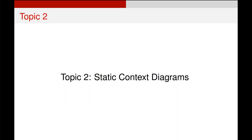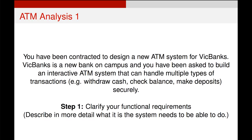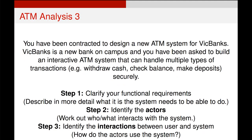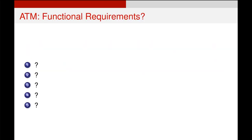Now we're going to talk about how we start actually making use case diagrams. We'll start off by talking about analysis. Going back to our example of VicBank's new ATM system, our first step is to clarify the functional requirements, then identify the actors in our system, and then identify the interactions between them. Once we've done those three things, we're in a good state to draw out a use case diagram. All a use case diagram does is map the actors to the use cases via their interactions.